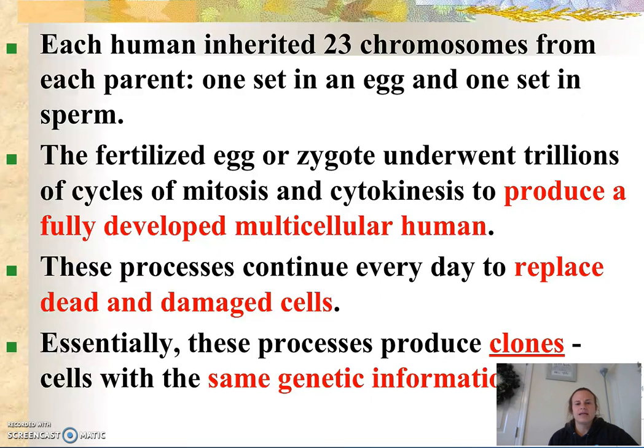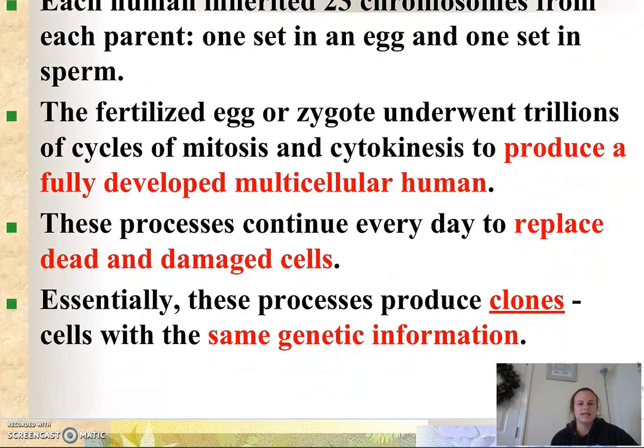Each human inherits 23 chromosomes from an egg and 23 chromosomes from a sperm, but in order to produce a fully developed multicellular human, mitosis plays a vital role.